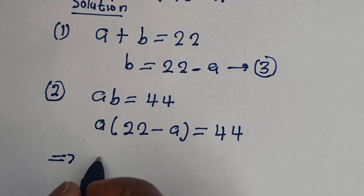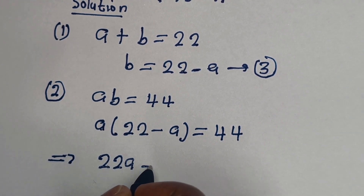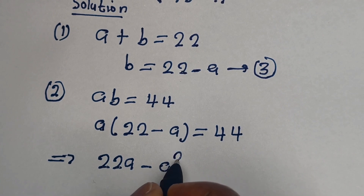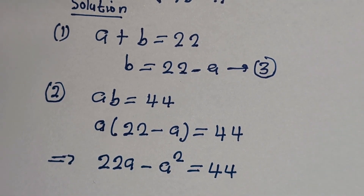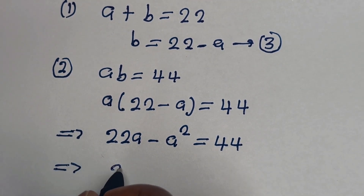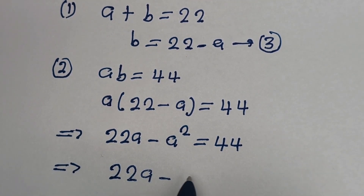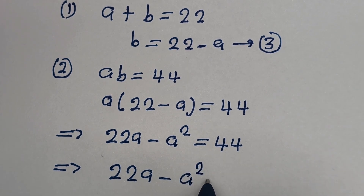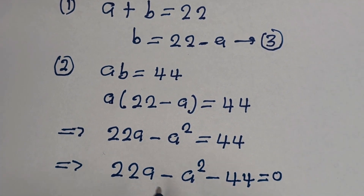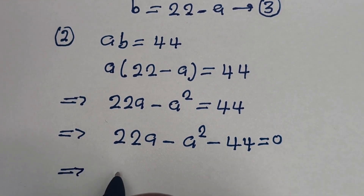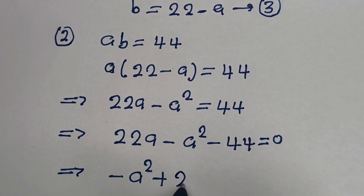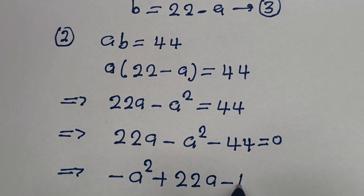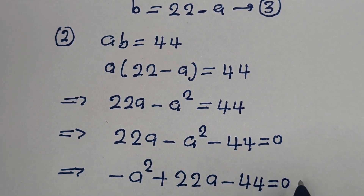Then A multiplied by 22 gives 22A, minus A multiplied by A. So 22A minus A squared minus 44 is equal to 0. Let us put this in standard form: minus A squared plus 22A minus 44 is equal to 0.